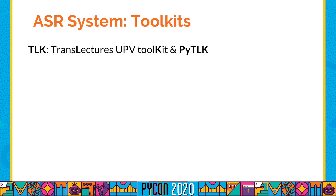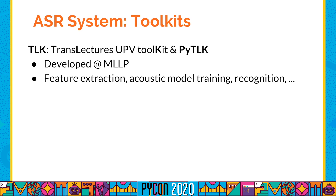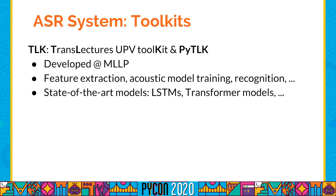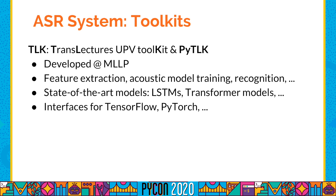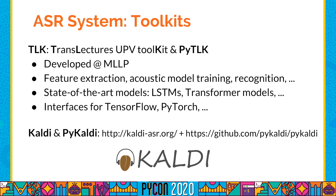During this talk, I'm going to show some examples using our own toolkit, the TransLectures UPV toolkit, and the Python extension PyTLK. This was developed at the machine learning and language processing research group. It covers the full ASR pipeline from feature extraction to recognition and evaluation, and uses state-of-the-art models such as LSTMs and transformer models, with interfaces to deep learning toolkits like TensorFlow or PyTorch. You can follow these steps with a different toolkit, such as Kaldi or PyKaldi, because the steps I'll follow are pretty standard.